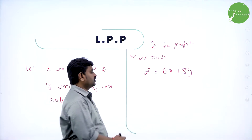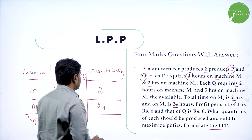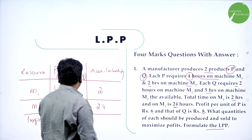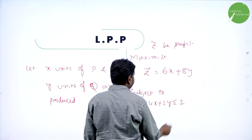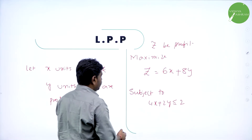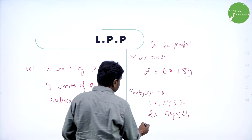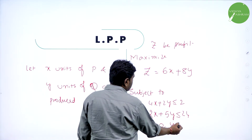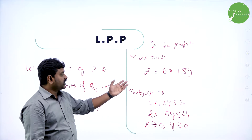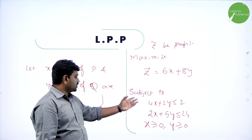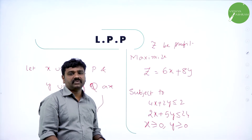This is the objective function — the function we need to maximize. Subject to conditions: machine M1 is available for 20 hours, so 4x + 2y ≤ 20, because we cannot use more than this. And 2x + 5y ≤ 24. The number of units produced should always be non-negative, so x ≥ 0 and y ≥ 0. This is the formulated LPP: maximize Z = 6x + 8y subject to these constraints.